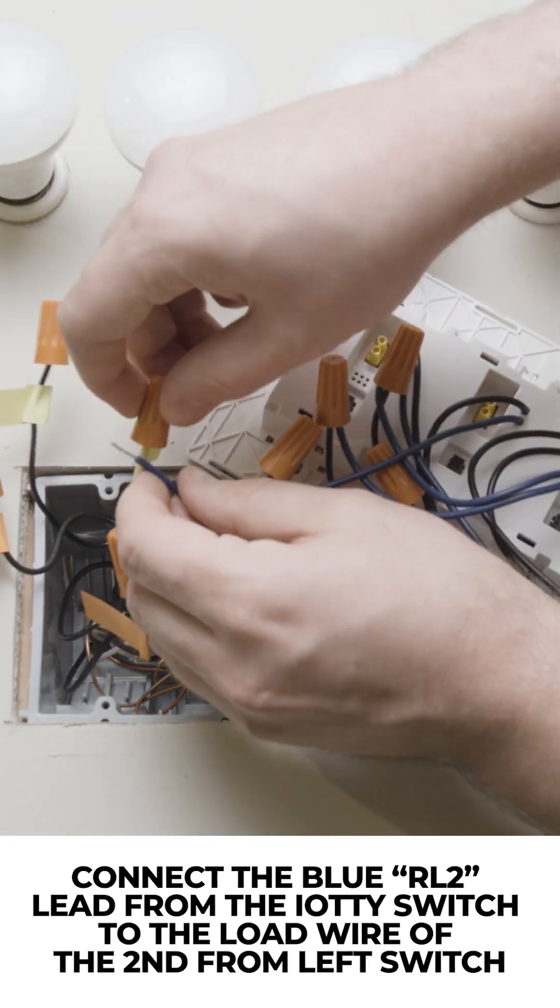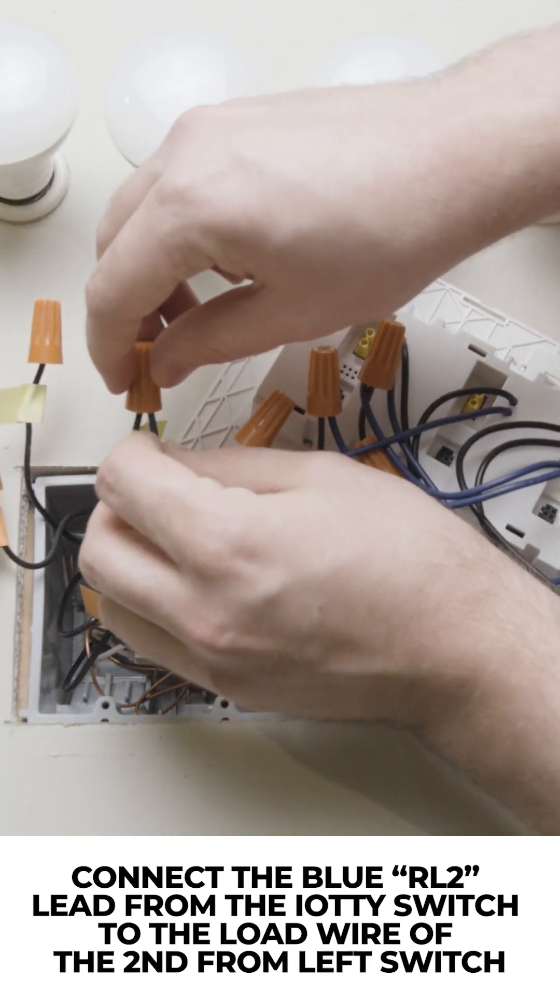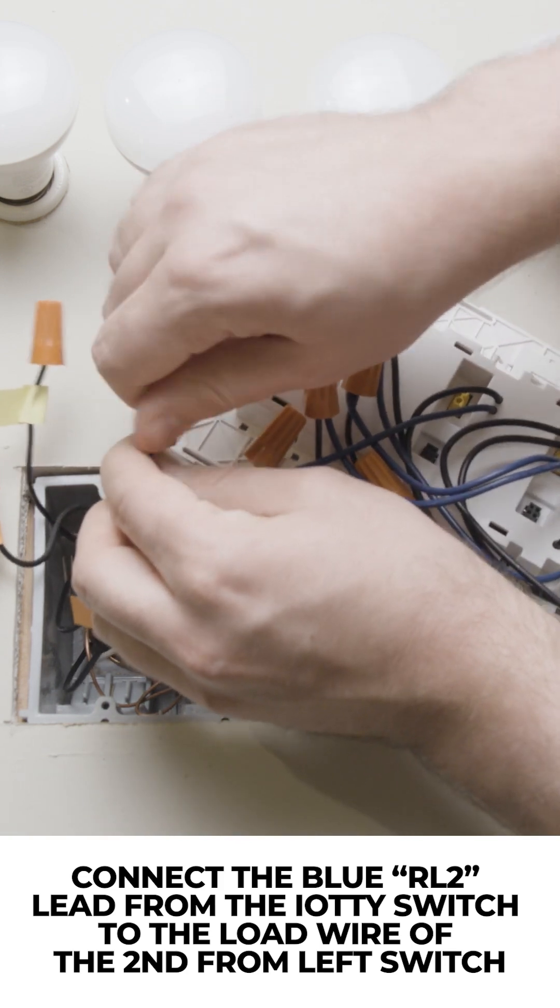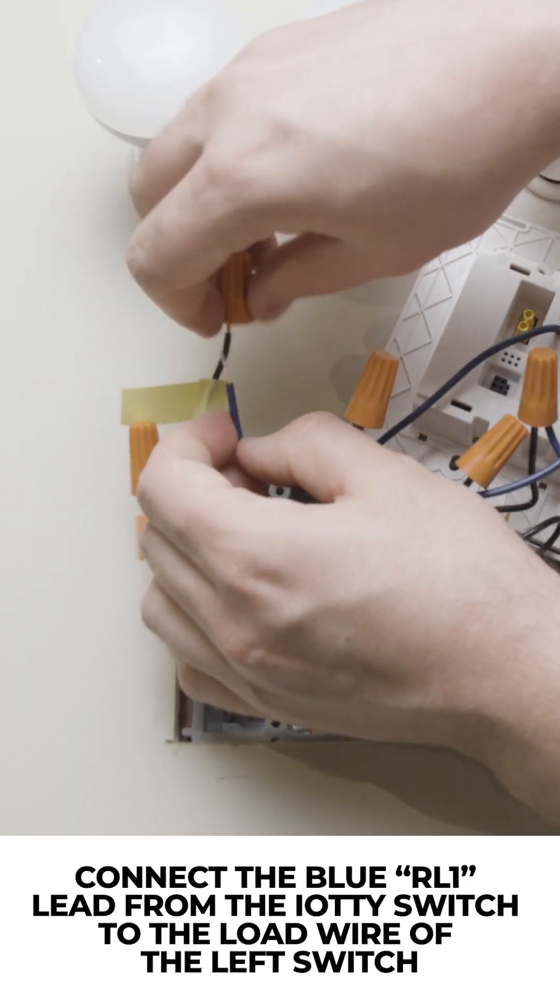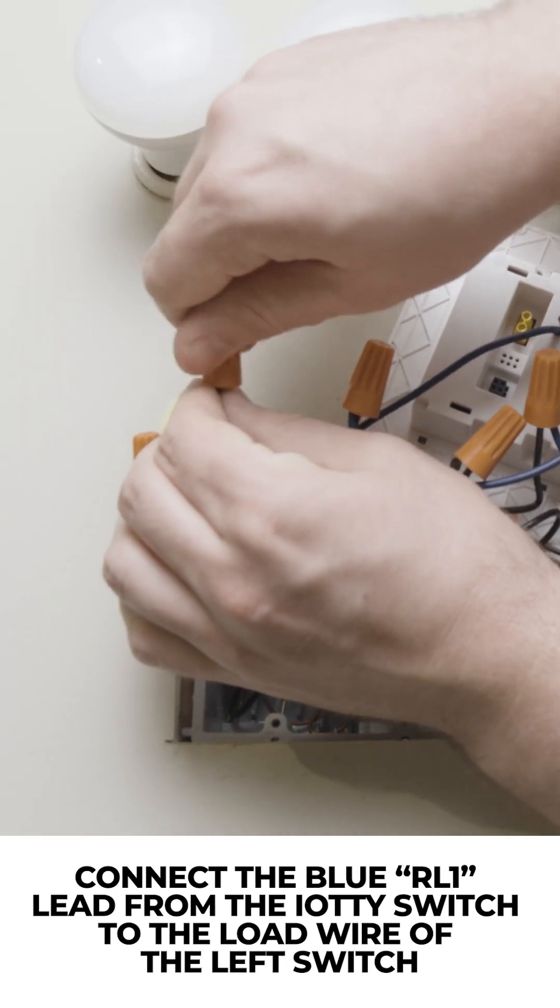Connect the blue RL2 lead of the IOTI switch to the load wire of the second from left switch. Connect the blue RL1 lead of the IOTI switch to the load wire of the left switch.